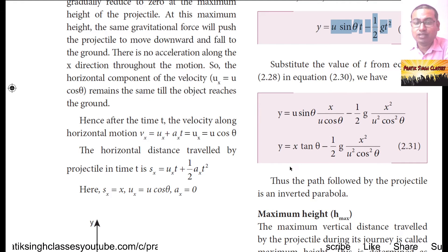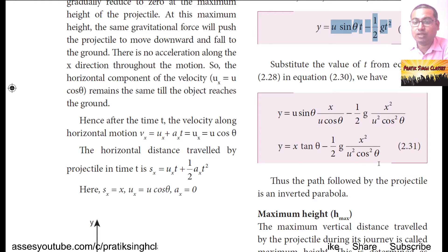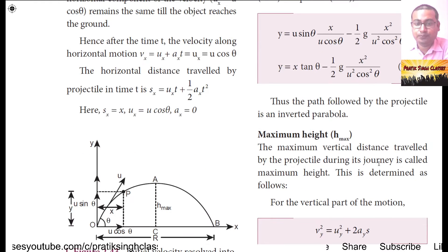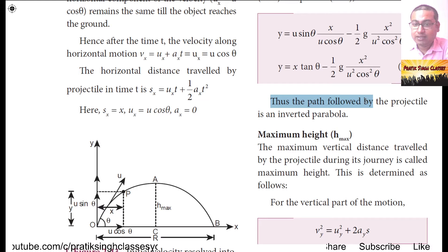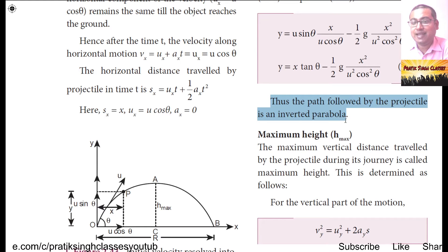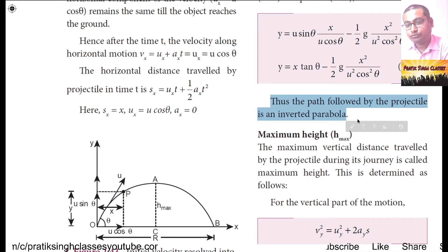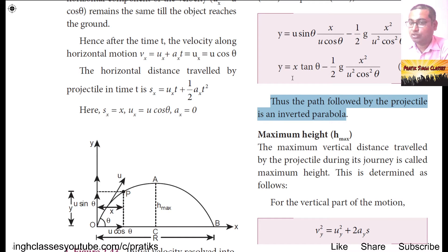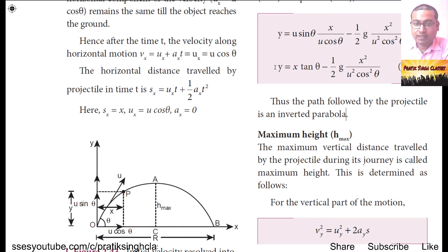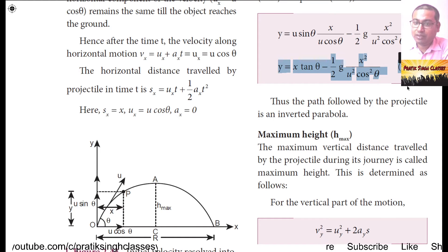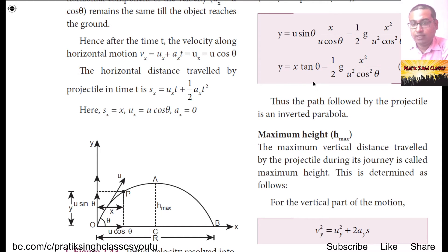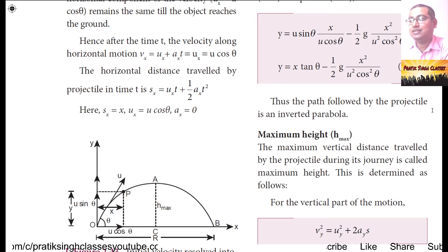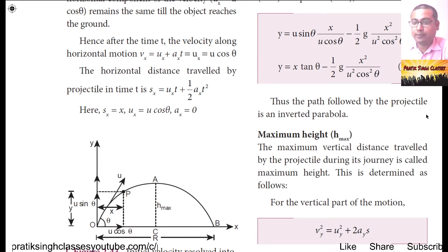Thus the path followed by a projectile is an inverted parabola. The general equation of a parabola is y = kx². In equation 2.31 we have the same form y = kx − kx², which is the equation of an inverted parabola.